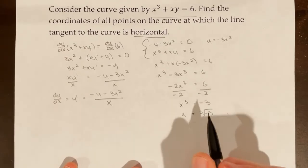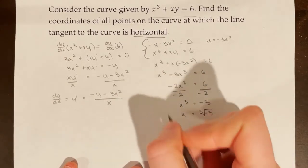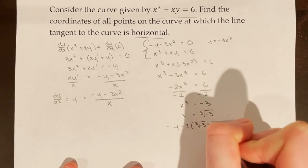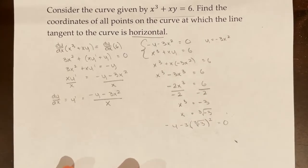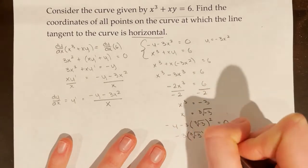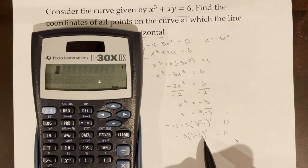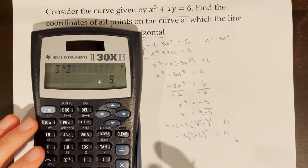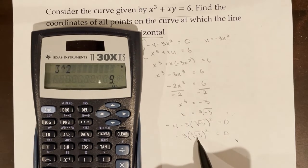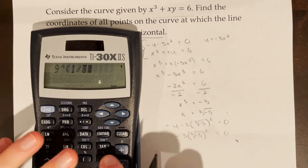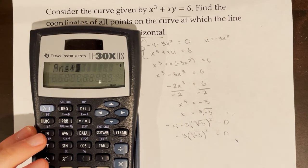To get the y-coordinate, I take this x value and plug it back in: negative y minus 3 times (cube root of negative 3) squared equals 0. Since negative 3 squared is 9, I take the cube root of 9 — which is 9 to the power of 1/3 on the calculator — then multiply by negative 3.